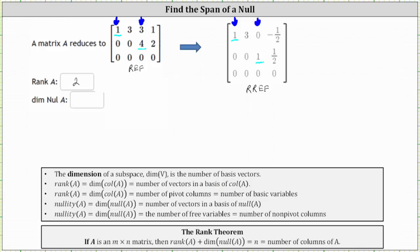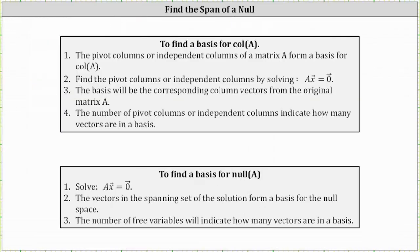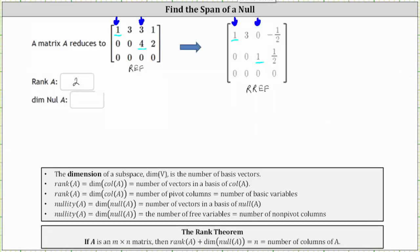This should make sense because to find a basis for the column space of A, the pivot columns — or independent columns — of matrix A form a basis for the column space of A. We find the pivot columns or independent columns by solving the equation A times vector x equals zero, writing matrix A in row echelon form or reduced row echelon form. If we wanted to find a basis for the column space, we would go back to the original matrix A and identify column one and column three as the two independent vectors that span the column space.